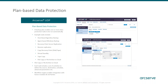We have disaster recovery capabilities where we can take and spin up your backups as virtual machines so that in case of some type of catastrophic failure, you can keep everything up and running, either on-site or off-site. Not only can we send the backups, but we could take individual files or folders from those backups and send those off to public cloud like Amazon or Azure as well.